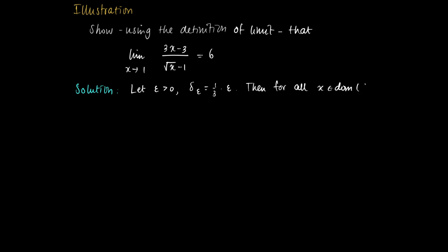The function under consideration is the fraction 3x minus 3 divided by the square root of x minus 1, so the domain is anything that is non-negative and unequal to 1. So for x in the symmetric interval (1 minus delta, 1 plus delta), except for 1 — that is, all x for which the absolute value of x minus 1 is in the open interval (0, delta) — by delta we mean delta epsilon, so 1 over 3 times epsilon.